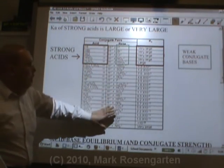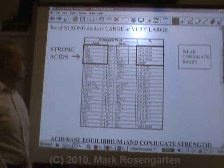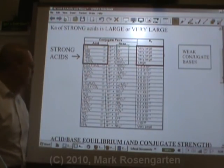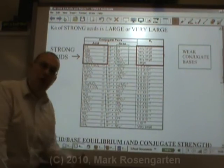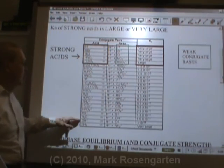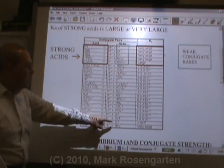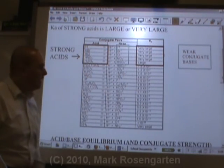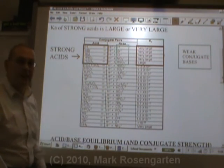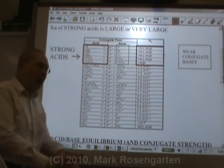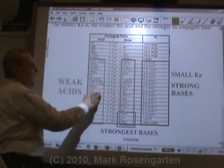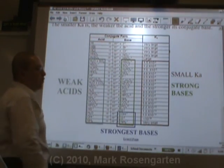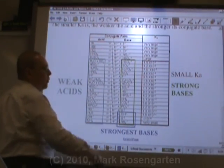Weak acids have very strong conjugate bases. So where HI and H2SO4 are strong acids with very weak conjugate bases, the acids down here — like hydroxide — are a great example of why Arrhenius picked hydroxide. Look how insanely weak it is as an acid, but look how strong it is as a base. OH- makes for a very weak acid but a very strong base, which is why Arrhenius picked up on it — it's common and it's very strong. So weak acids, those that have small Ka, will have strong conjugate bases, and the strongest conjugate bases are the ones down toward the bottom.